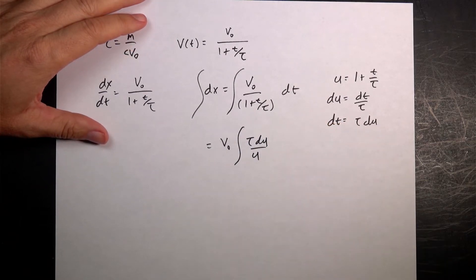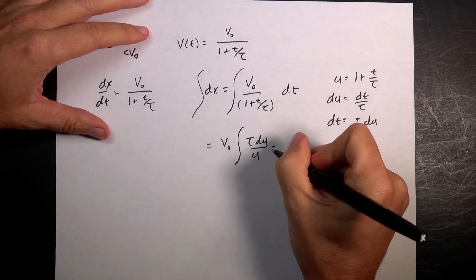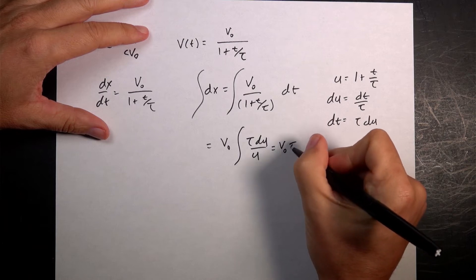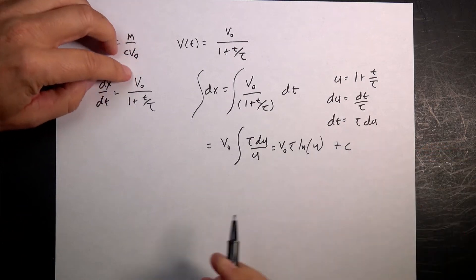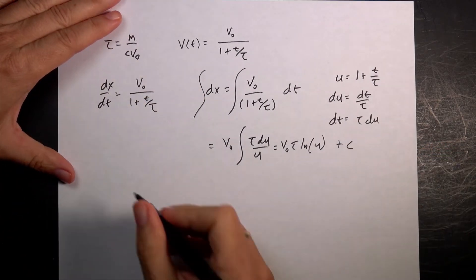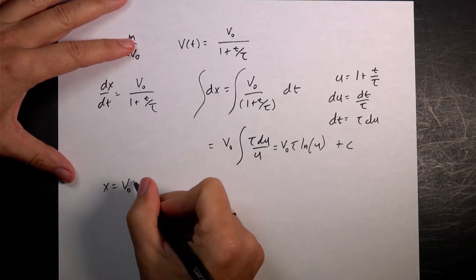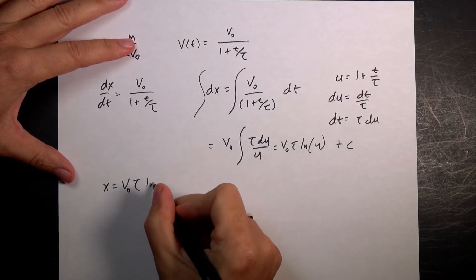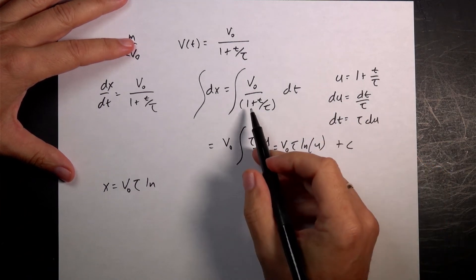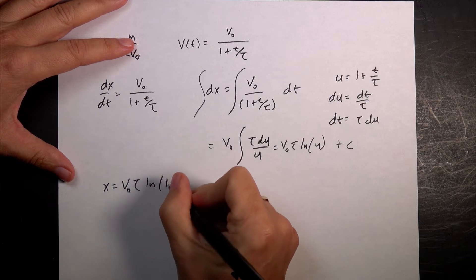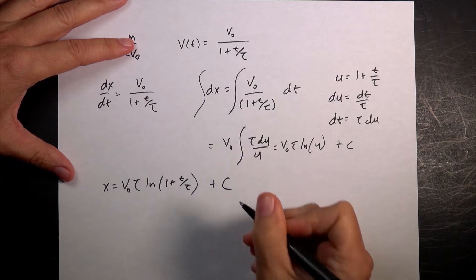So I can change this integral to v0, leave that there, the integral of tau du over u. Now that integral I can do, right? The integral of du over u is just going to be the natural log of u. So I get v0 tau natural log of u plus a constant. So that integral becomes x. So I have x equals v0 tau natural log of, let's go ahead and put in my value for u back in. So I have natural log of 1 plus t over tau plus some constant. And that's a capital constant.